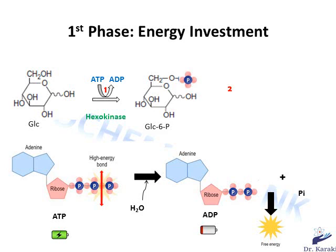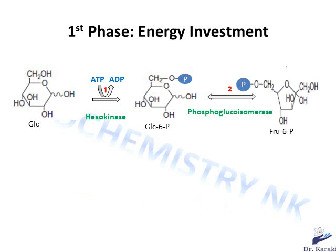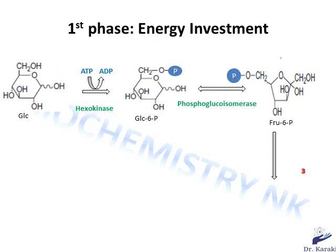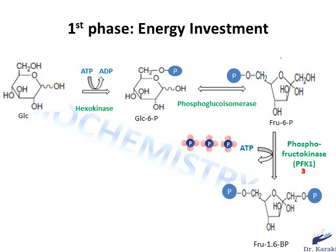The second step is the conversion of glucose 6-phosphate into its isomer, fructose 6-phosphate. This reaction occurs with the help of the enzyme phosphoglucoisomerase, and involves an isomerization or rearrangement of the atoms. In the third step of glycolysis, fructose 6-phosphate is converted to fructose 1,6-bisphosphate. Similar to step 1, a second molecule of ATP is consumed to provide the phosphate group added to fructose 6-phosphate. The enzyme that catalyzes this reaction is phosphofructokinase 1. So far, the first and third steps are irreversible reactions — that means they are rate-limiting steps — and the second one is reversible. Two molecules of ATP are invested so far.